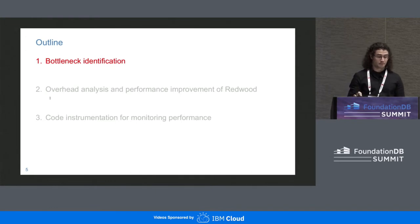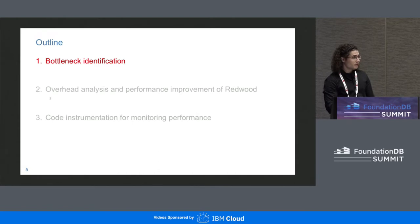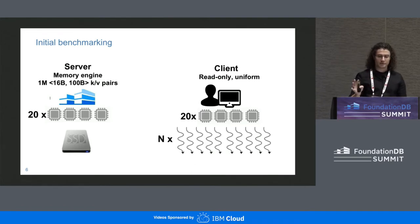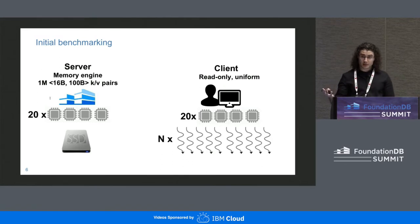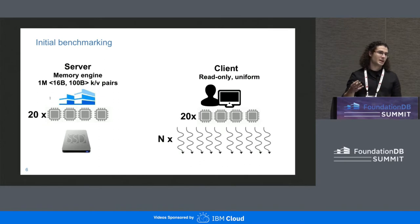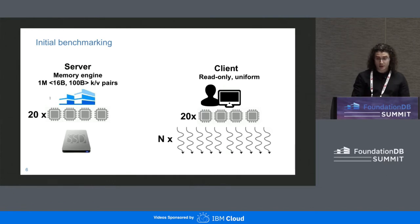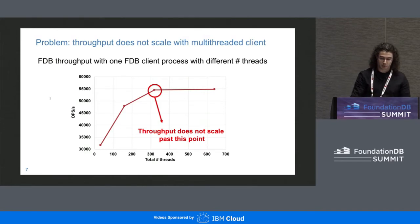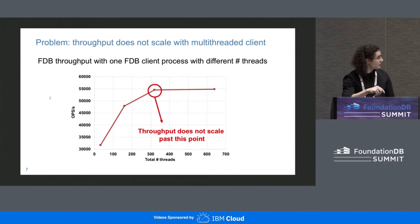Let's get started with the first use case: bottleneck identification. When we started our project with FoundationDB, we ran a simple benchmark — a server with a memory engine loaded with uniform key-value pairs, and a client on another machine injecting simple read-only transactions from a uniform workload with varying numbers of threads. The results show that after an initial scalability phase, we hit a bottleneck where performance stops growing, and we want to understand what's going on.